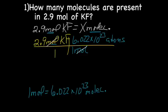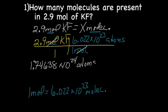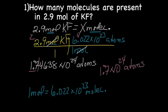And from here, I'm going to multiply across. And when I did that, I got 1.74638 times 10 to the 24th atoms. I'm bringing my units with me. All right. And when I go back and check out sig figs, I have 2.9, which is 2 sig figs, and 6.022, which is 4 sig figs. So my answer is going to have 2 sig figs. The 4 is less than 5, so I just drop. So my final answer is going to be 1.7 times 10 to the 24th atoms.